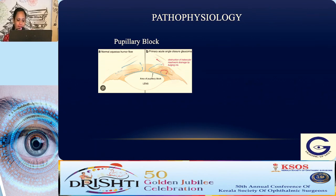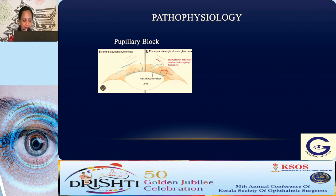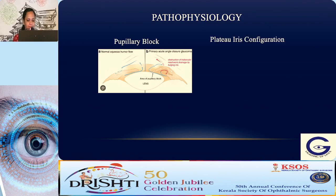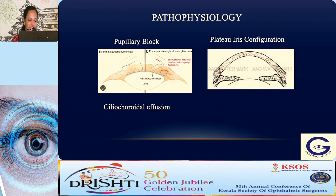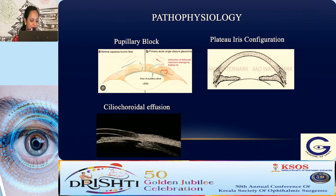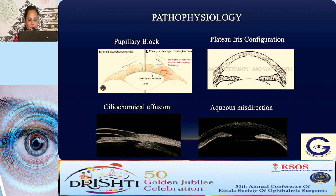The first mechanism is pupillary block, where functional obstruction happens at the pupillary plane between the iris and the lens. The aqueous collects in the posterior chamber, the iris is pushed forwards, and closes the angle. In plateau iris configuration, there is anterior insertion of the iris onto the ciliary body, and when the pupil dilates the angle gets obstructed. In ciliochoroidal effusion, ciliary body edema and anterior rotation push the entire iris-lens diaphragm forward causing angle obstruction. In aqueous misdirection, the same forward pushing mechanism applies.